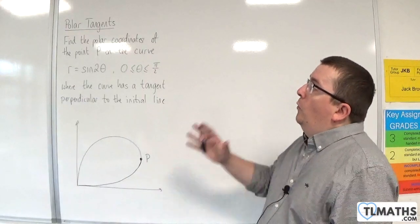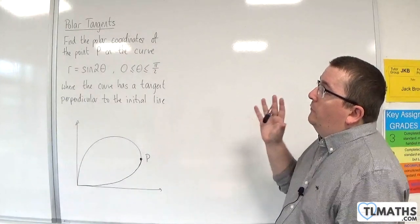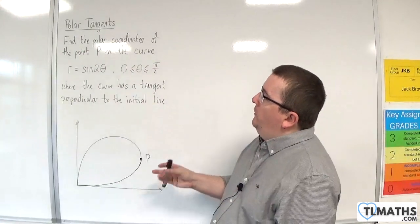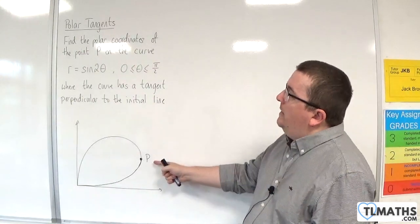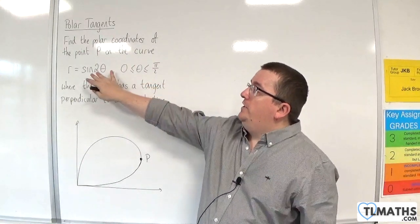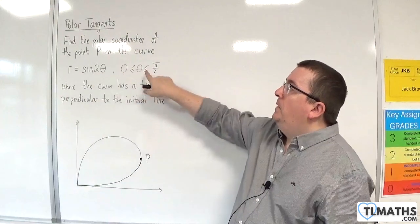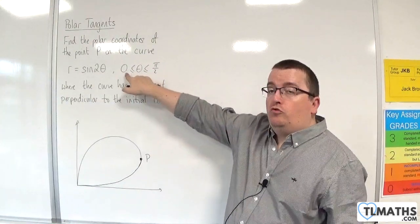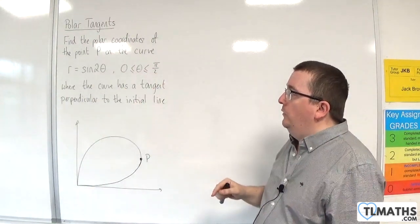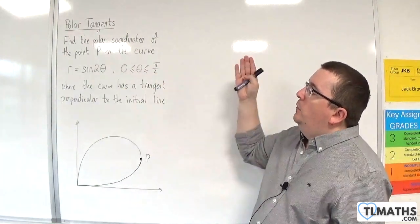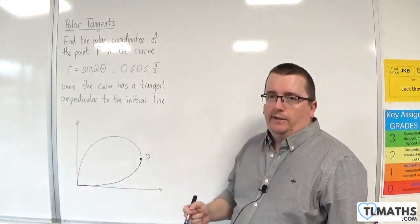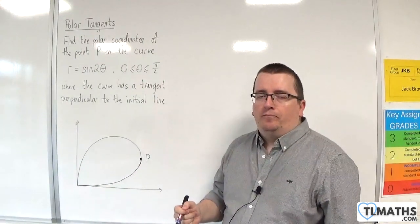In this video, we're going to look at finding the polar coordinates of the point P on the curve R equals sine 2θ, where θ is restricted between 0 and π/2 inclusive, where the curve has a tangent perpendicular to the initial line.